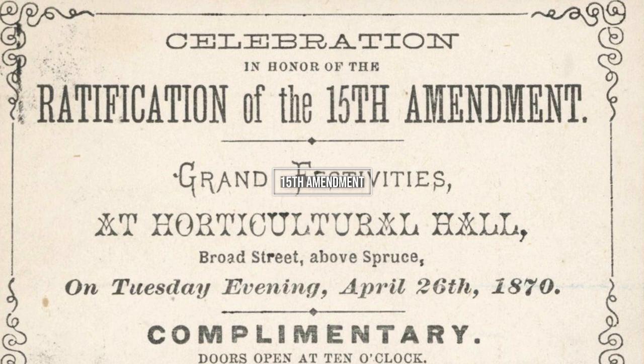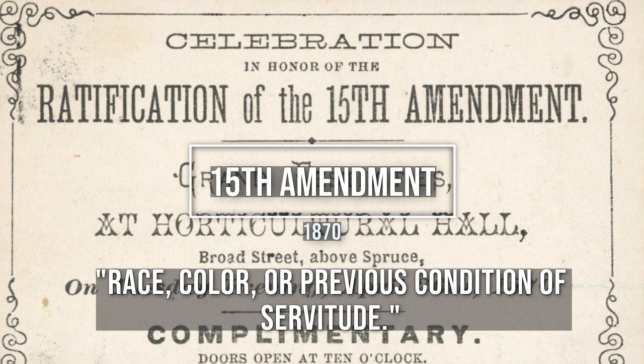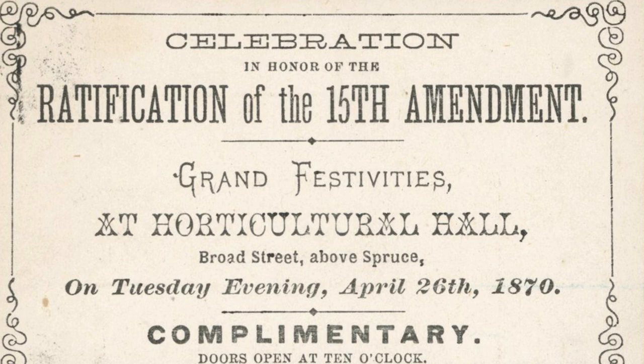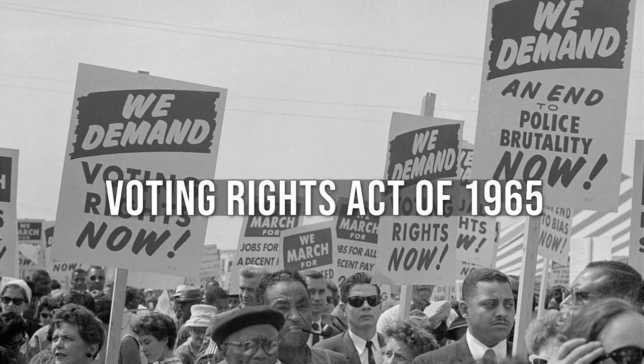The 15th Amendment to the United States Constitution, ratified in 1870, prohibits the denial of voting rights based on race, color, or previous condition of servitude. The amendment was a response to the widespread disenfranchisement of Black Americans in the aftermath of the Civil War and Reconstruction. Despite its passage, the 15th Amendment did not immediately lead to universal suffrage for Black Americans. In the decades that followed, Southern states implemented a range of discriminatory policies, including poll taxes and other requirements designed to disenfranchise Black voters. It was not until the Voting Rights Act of 1965, which provided federal oversight of voting practices and eliminated many of the barriers to voting, that the full promise of the 15th Amendment was realized.